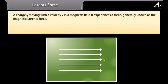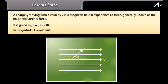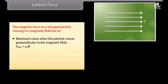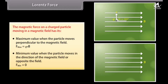A charge Q moving with a velocity V in a magnetic field B experiences a force generally known as the magnetic Lorentz force. It is given by F = Q(V × B). In magnitude, F = QVB sinθ. The magnetic force has its maximum value when the particle moves perpendicular to the magnetic field: F_max = QVB. The minimum value is when the particle moves in the direction of the magnetic field or opposite the field: F_min = 0.